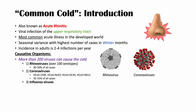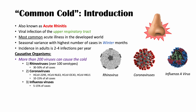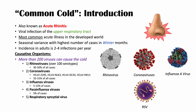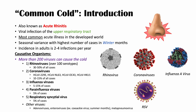The third most common category are the influenza viruses, causing about 5 to 15% of cases. Parainfluenza viruses can also cause the common cold, roughly about 5% of cases. The respiratory syncytial virus, or RSV, can cause about 5% of cases as well. Other less common viruses include adenoviruses and enteroviruses like the Coxsackie virus — usually associated with summer colds — and metapneumovirus.